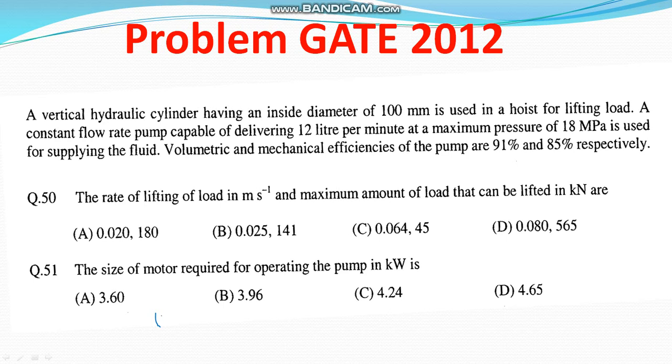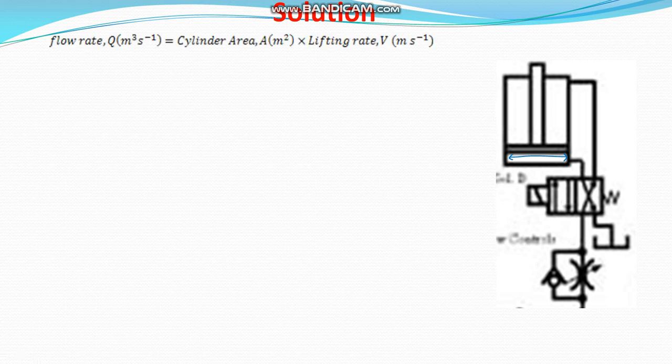This is a basic problem but a few tricks are needed to solve it. The system is like this — a vertical lifting cylinder. This is the hydraulic cylinder, and this is the DCV, the directional control valve. There is a pressure control valve, a motor, and a pump. The flow comes from the pump into the cylinder.